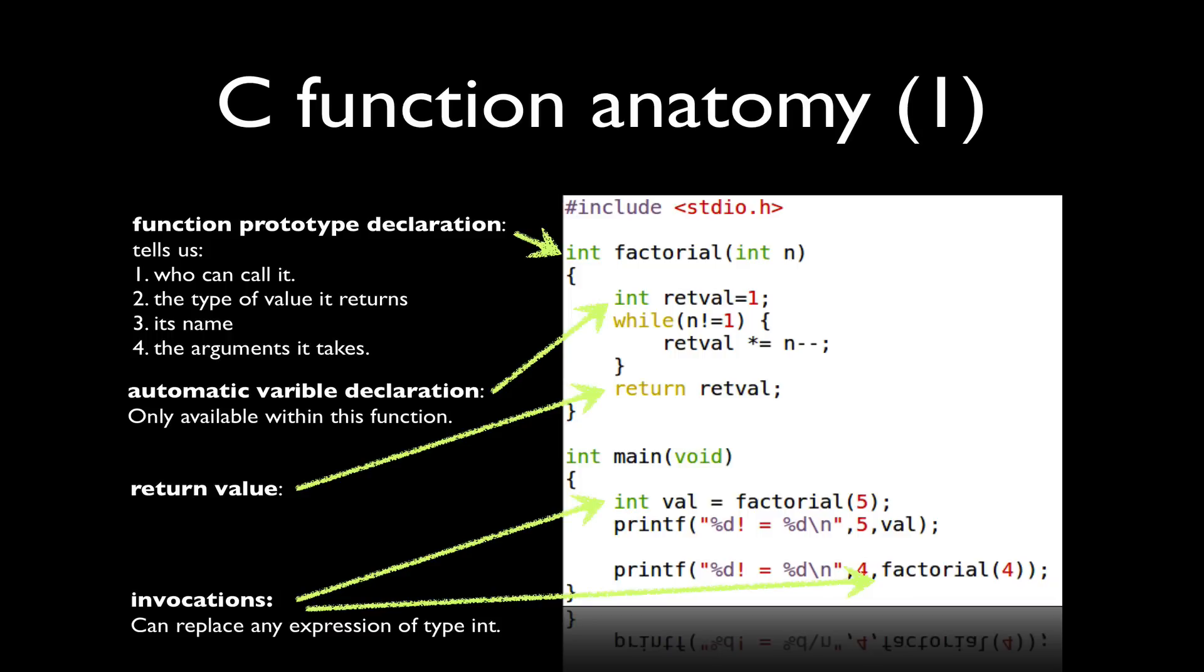Now the function itself can replace any expression of its return type. So in this case, it's on the right hand of the equal sign, and it returns an int, so it's perfectly valid to have the variable val initialized to the invocation of the function factorial 5, because that will indeed return an integer.